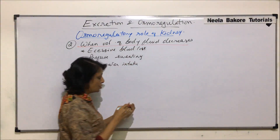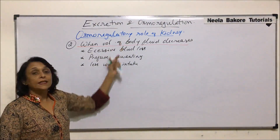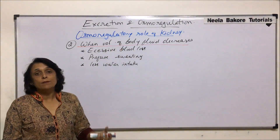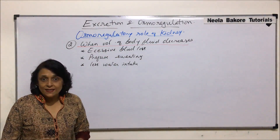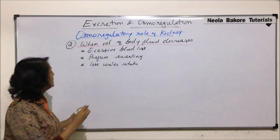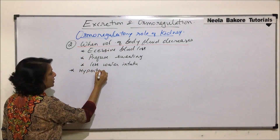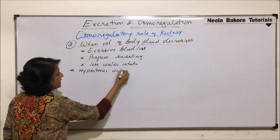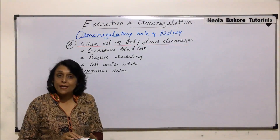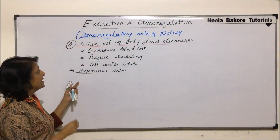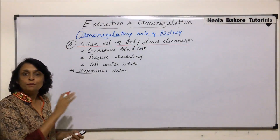This is situation two, and we want to understand how the kidneys would absorb more and more water and eliminate less and less, resulting in elimination of hypertonic urine. Here the kidneys would absorb more and more water, and this type of osmoregulation takes place by different methods.